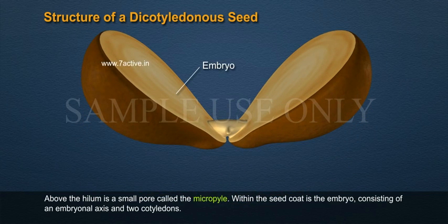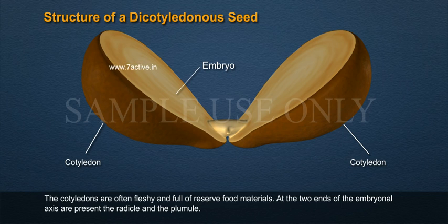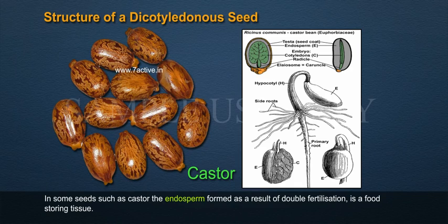Above the hilum is a small pore called the micropyle. Within the seed coat is the embryo, consisting of an embryonal axis and two cotyledons. The cotyledons are often fleshy and full of reserved food materials.